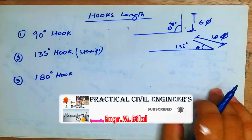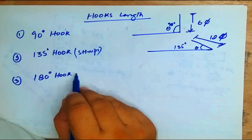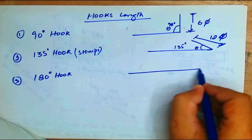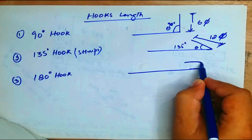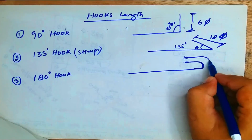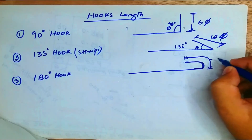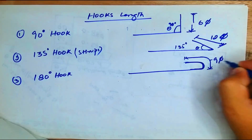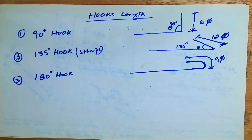The third type is the 180-degree hook, which is commonly used in slabs, beams, and other members. For the 180-degree hook, the extra length to be added is 9 times the diameter of the bar (9d).